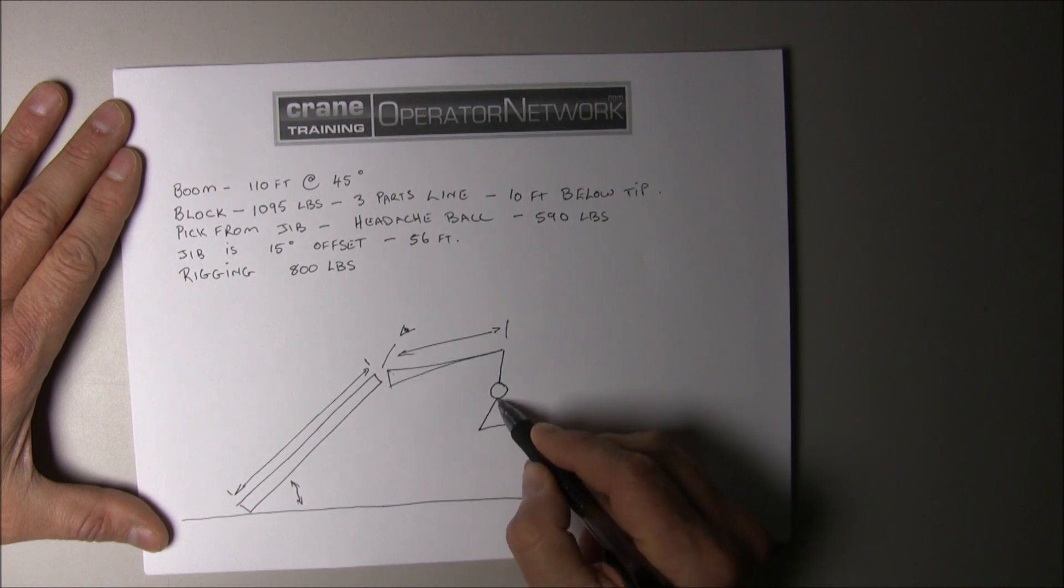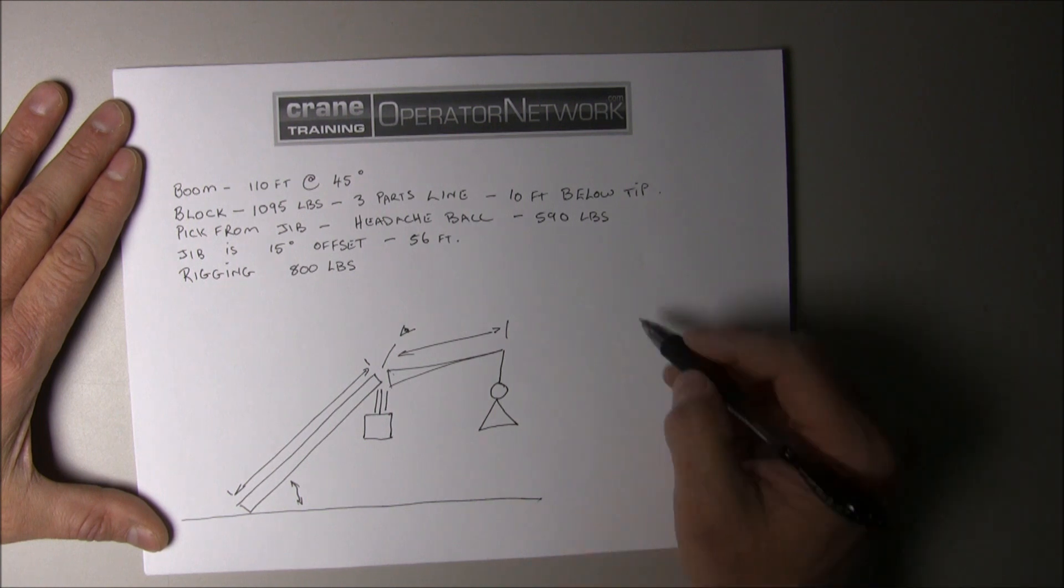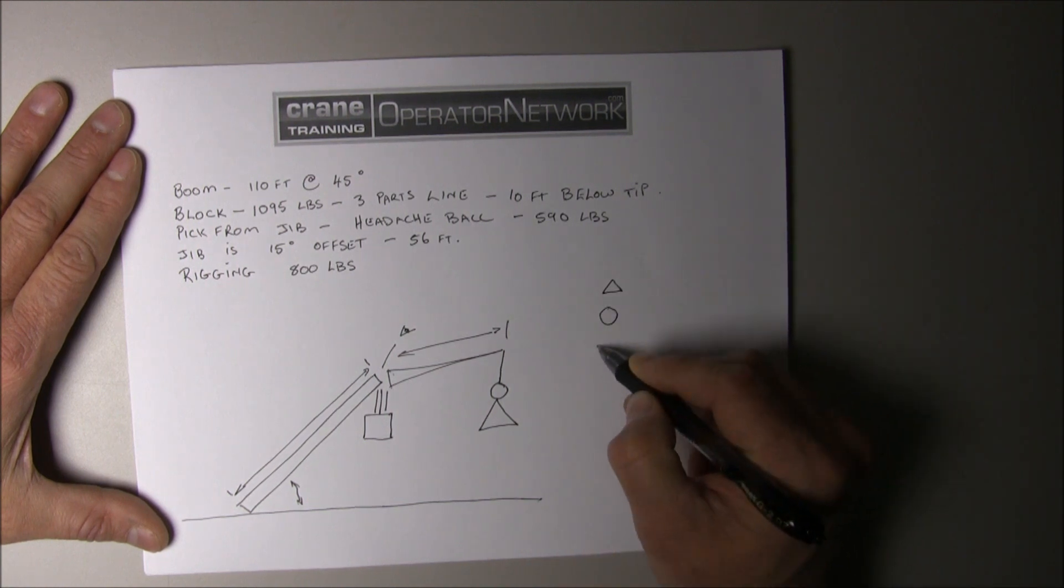If you notice, we have the boom length, angle, the offset degrees for the jib, the parts of line, the block, the headache ball, as well as the rigging.